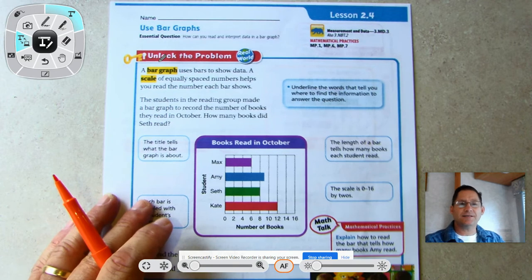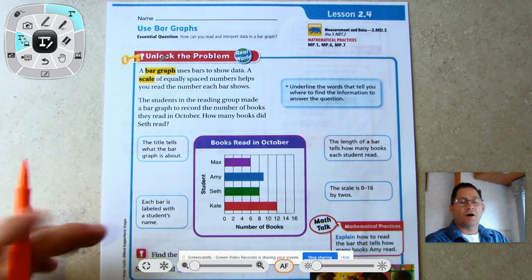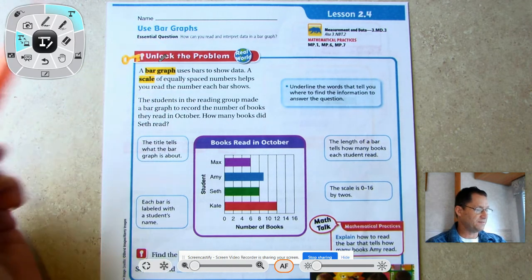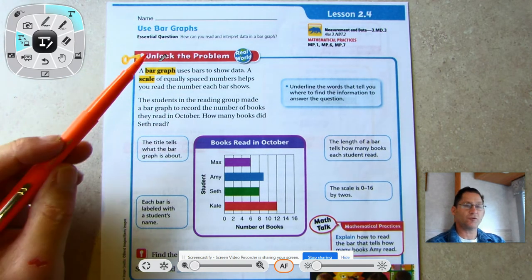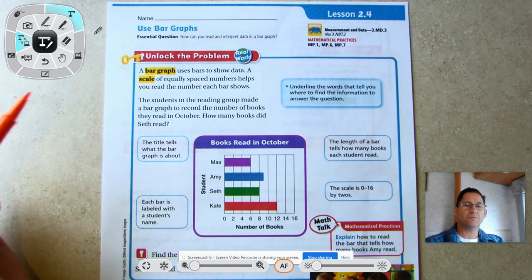Okay, in today's lesson we're on lesson 2.4, page 77. Our lesson is using bar graphs and our essential question: how can you read and interpret data in a bar graph?